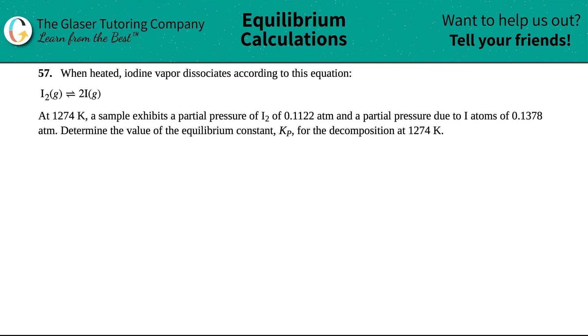Number 57: When heated, iodine vapor dissociates according to this equation. We got I₂ gas which comes to equilibrium with 2I gas. At 1274 Kelvin, a sample exhibits a partial pressure of I₂ of 0.1122 atm and a partial pressure of I atoms of 0.1378 atm. Determine the value of the equilibrium constant Kp for this decomposition at 1274 Kelvin.